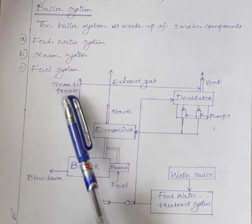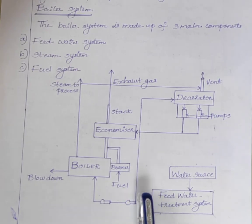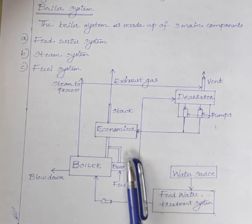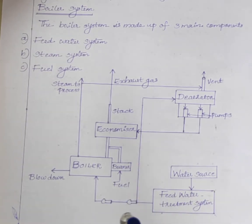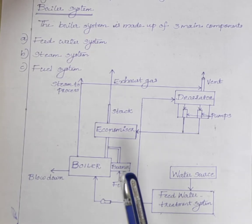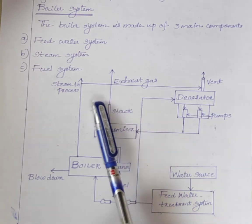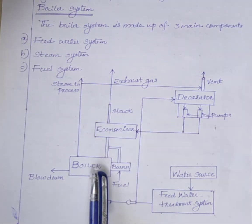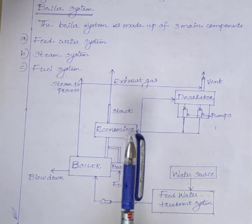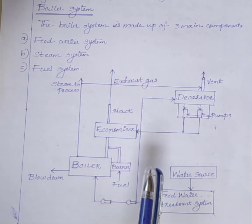Next is the fuel system. Fueling is the heart of the boiler process. The fuel system consists of all necessary components and equipment to feed fuel to generate required heat. The equipment required in the fuel system depends on the type of fuel used in the system.